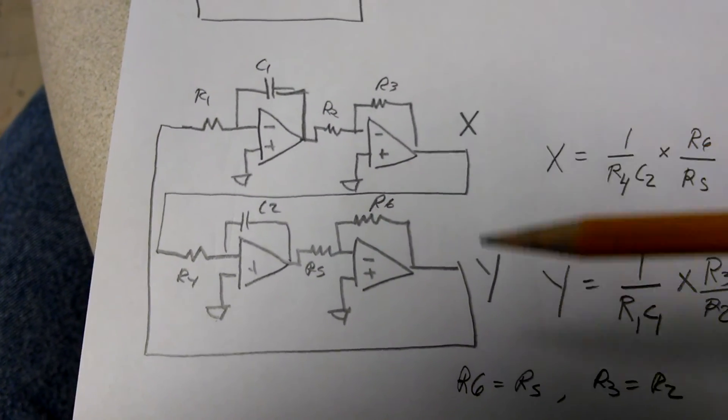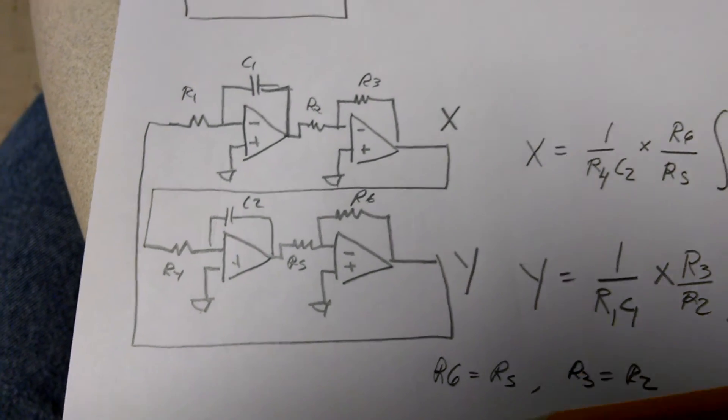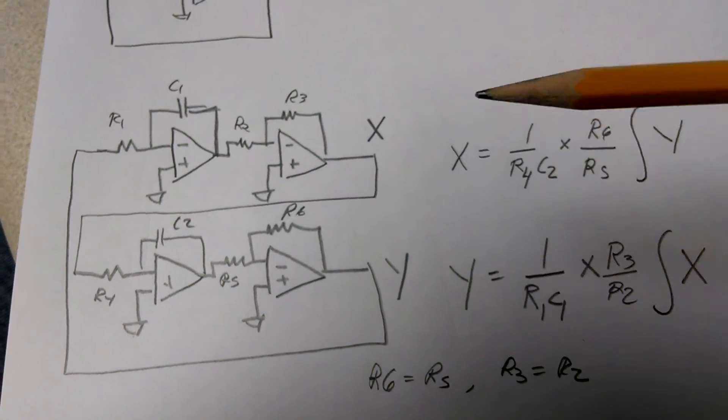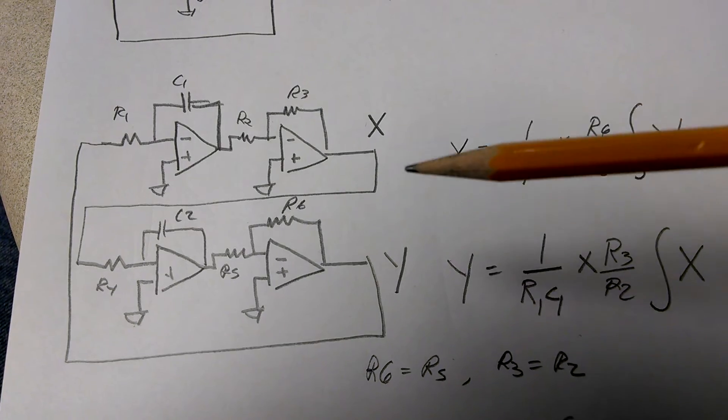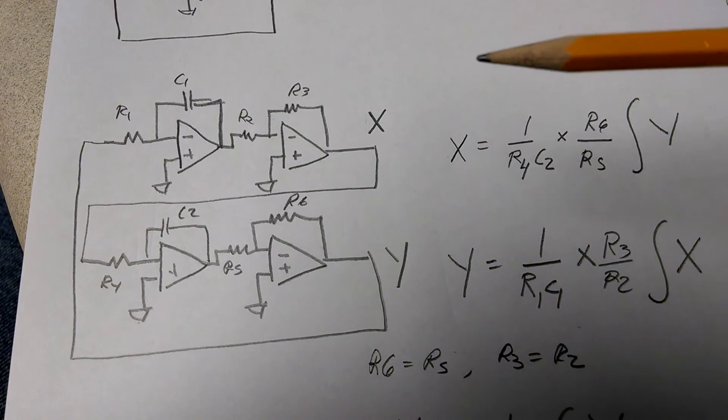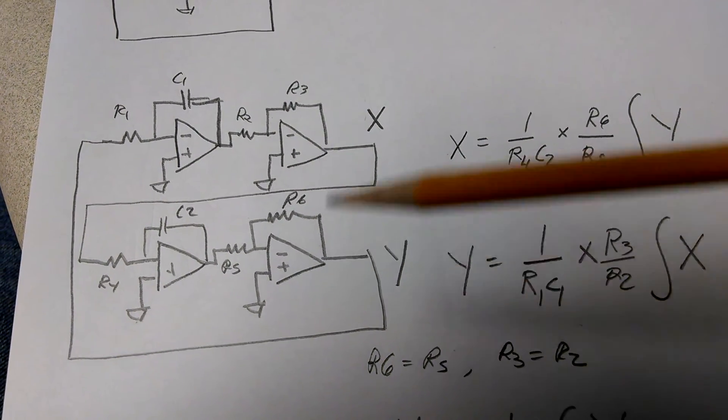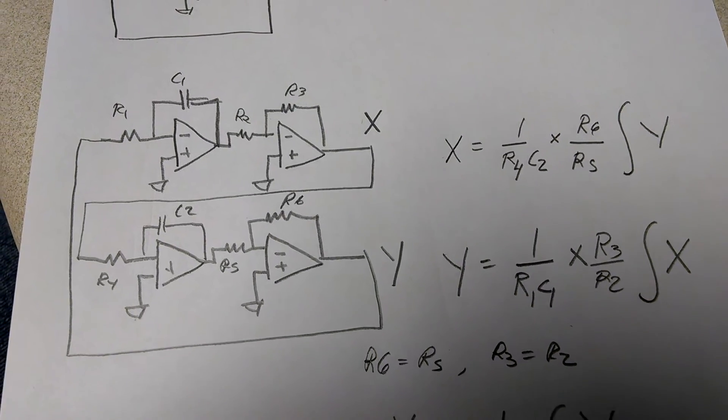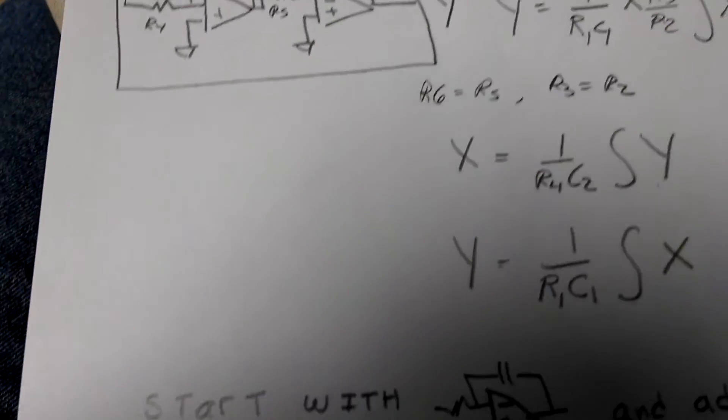Now, I haven't talked about the initial conditions. And I do have examples later on to tell you how to put an initial condition and how sometimes you can really drop some of these op-amps. But the thing is, you just want to summarize.